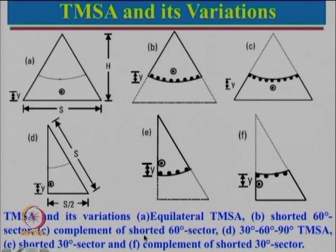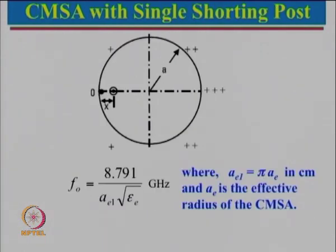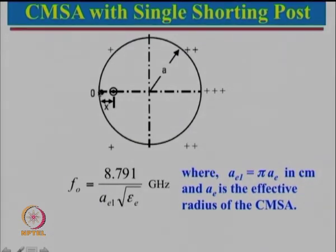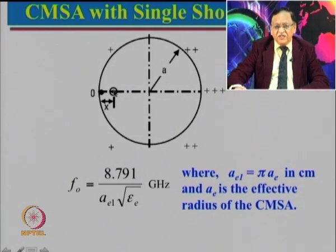Now let us look at the option for a circle where we put a single shorting post. For a rectangle with a single shorting post, the length was lambda by 4. But here things are slightly different. If we put a short here and place the feed point along this axis for impedance matching, the field variation will be 0, then plus, double plus, triple plus.